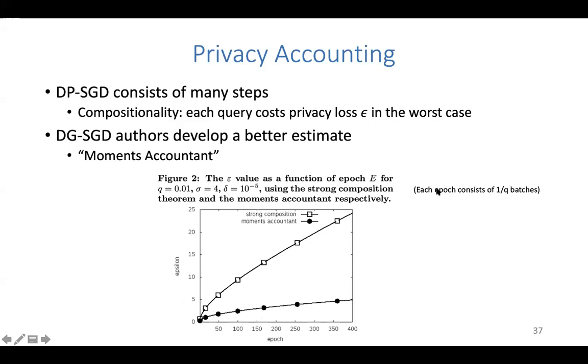In this setting, q can be thought of as the sampling ratio, so each epoch consists of 1/q batches — in this case 100 batches per epoch.